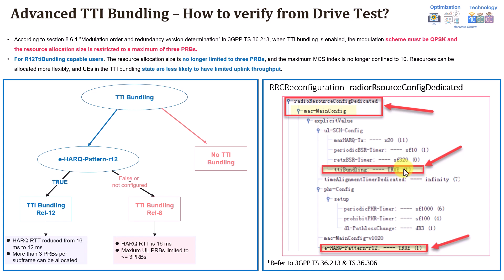In the RRC configuration message sent from the eNB to the UE, under Radio Resource Configuration Dedicated, check the MAC main configuration parameter. If TTI bundling is enabled, this will be set to true; if not triggered, it will be false. For Enhanced HARQ, under MAC configuration V1020, you will find an additional field — 'eHARC Pattern Release 12 is being supported' — indicating the user falls under Advanced TTI bundling with better latency and no uplink resource block restriction, giving improved uplink throughput.